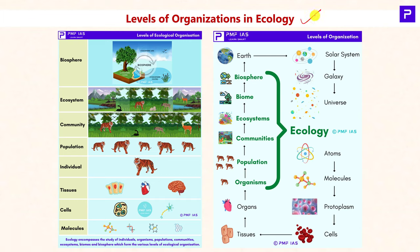Coming to Topic 1 of the chapter: levels of organization in ecology. In the universe there are various levels of organization, starting with atoms and ending with the universe as a whole. In between, there are various levels where life is a dominant factor. These levels of organization where life is dominant are the ones we study under ecology.